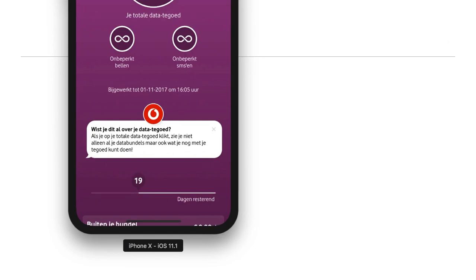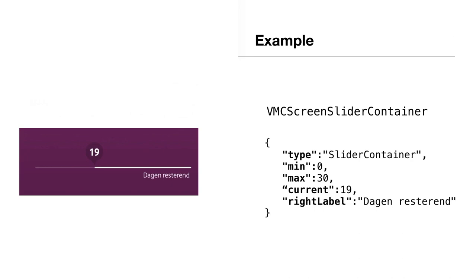Let's look at just one view and how it's built. The code you see is JSON, and the type is a slider container, which is the name of the component — from this we know we should show a slider. Then we have a min, a max, and a current value, and with that we can build a slider: we know where it should start, where it should end, and with current we can display the point where it should be. With the right label we can give a description to the slider. This is a very generic component — we can also use it on the bundle screen, for example, to display how many days are left until the bundle expires.